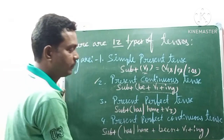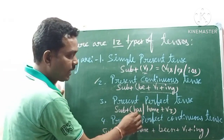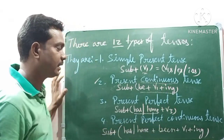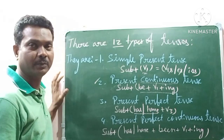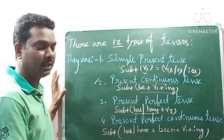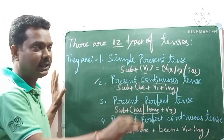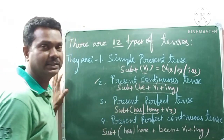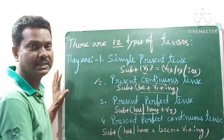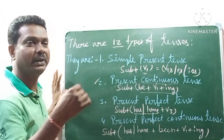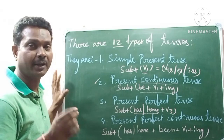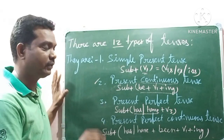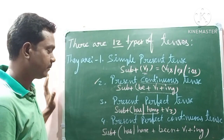Next, present perfect tense. When we say 'perfect,' a have-form verb is used — has or have — followed by V3. Present perfect tense refers to just completed actions. At the time of talking, if an action has just been completed, we use present perfect tense. The structure is: subject plus has/have plus V3.